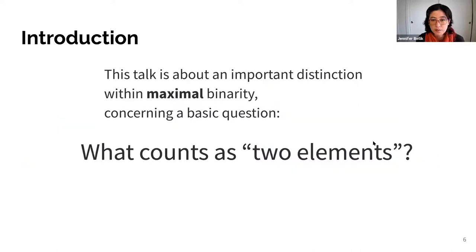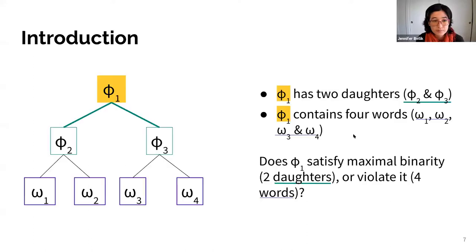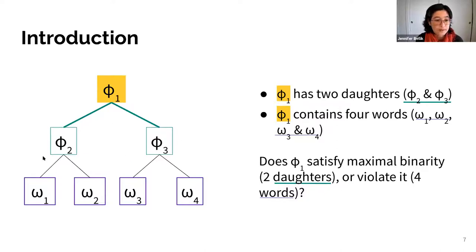For an example: phi-one has exactly two daughters, so it satisfies both maximal and minimal binarity. Whereas phi-two has only one daughter — it satisfies maximal binarity because it doesn't have more than two, but violates minimal binarity because it only has one. This talk is about an important distinction within maximal binarity concerning a basic question: what counts as two elements? Phi-one has two daughters but contains four words, because those two daughters are both phis in their own right, each containing two words. Does phi-one satisfy maximal binarity since it has two daughters, or violate it because it contains four words?